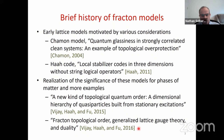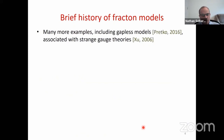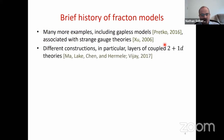It took until 2015 and 2016, with papers by Vijay, Haah and Fu, for the significance of these models for describing phases of matter to be realized — a span of 12 years from Chamon's paper. The titles show the change in perspective: 'A New Kind of Topological Quantum Order,' mentioning quasiparticles and excitations; and 'Fractal Topological Order, Generalized Lattice Gauge Theory, and Duality.' After 2016, the floodgates were opened and many more examples were found, including gapless models by Pretko in 2016, associated with strange tensor gauge theories first proposed by Xu.